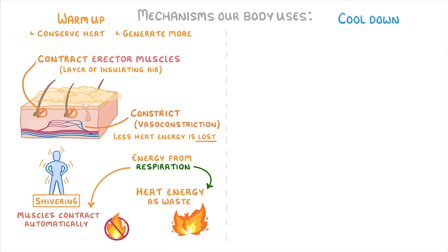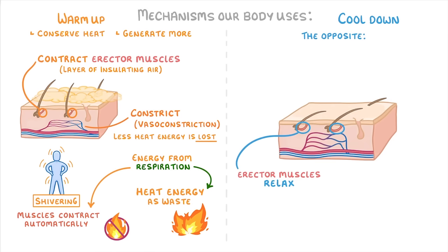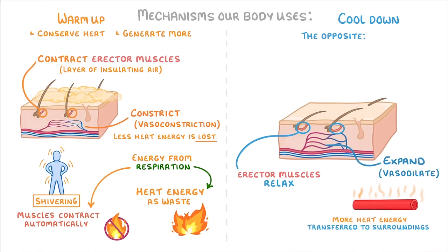Meanwhile, to cool us down, we basically do the opposite. So the erector muscles relax, allowing the hairs to fall flat, and the blood vessels expand, or vasodilate, allowing more heat energy to be transferred to the surroundings, because lots of warm blood is passing close to the skin's surface.